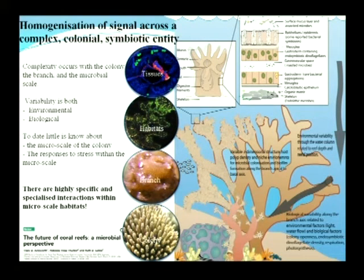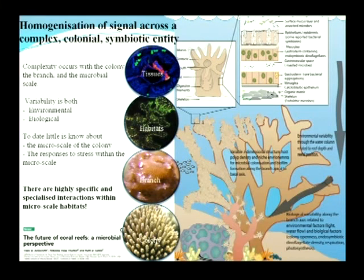When we do a bleaching experiment, we're taking entire coral branches, homogenising them, and doing extraction on a subsample of the homogenised sample. This results in a homogenisation of the signal from a complex colonial symbiotic entity. When we think about the coral colony, we know there is significant complexity within the coral branch at the microbial scale — both environmental and biological variability — and we don't actually know what's happening at the microscale and within those micro-scale responses.